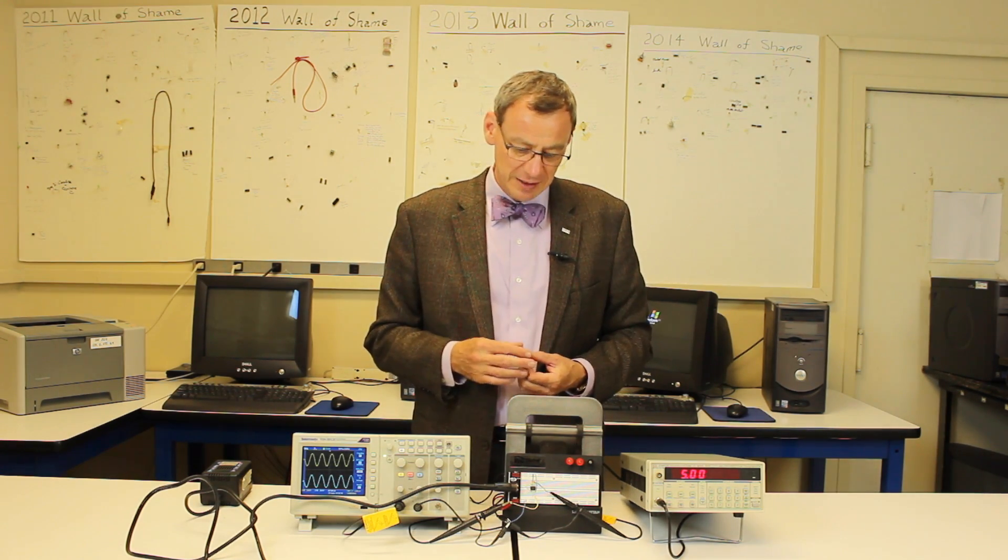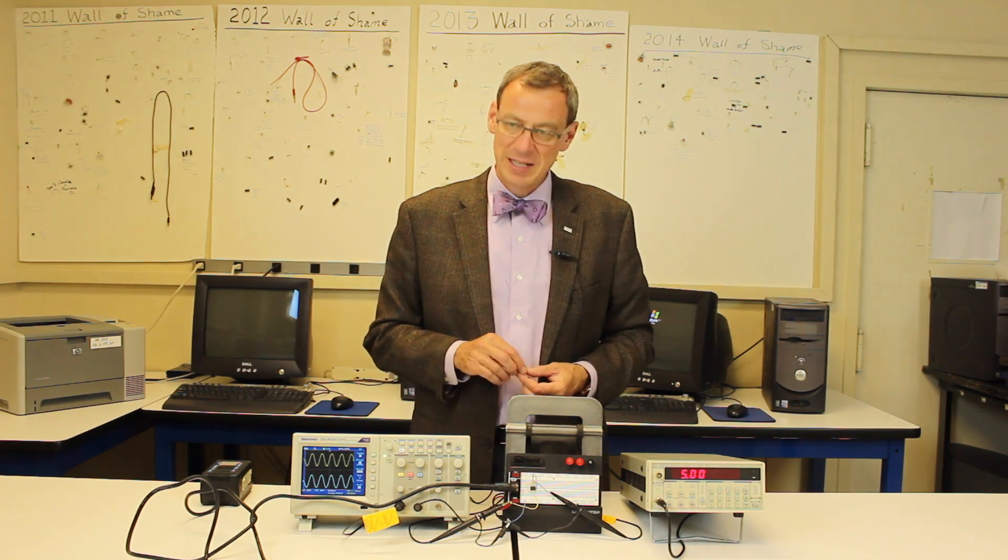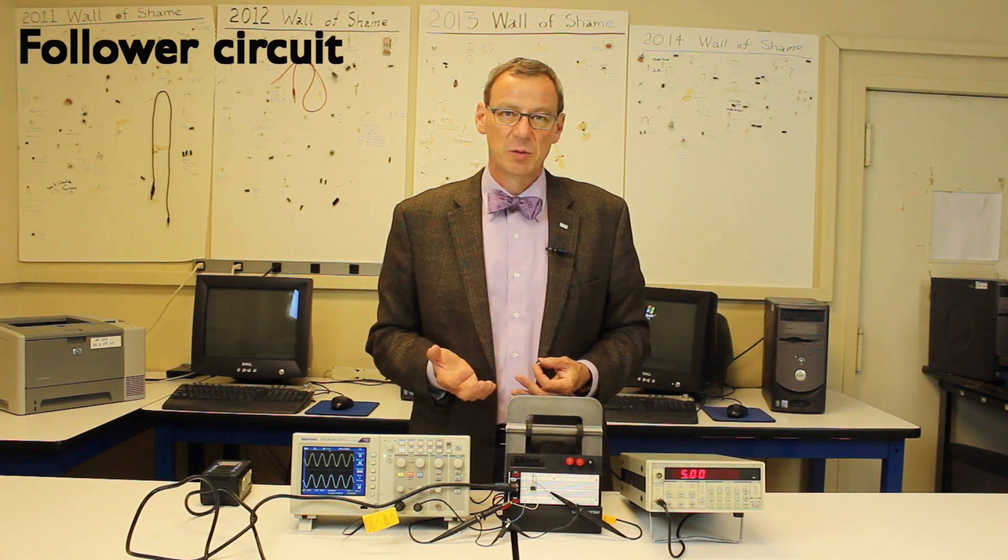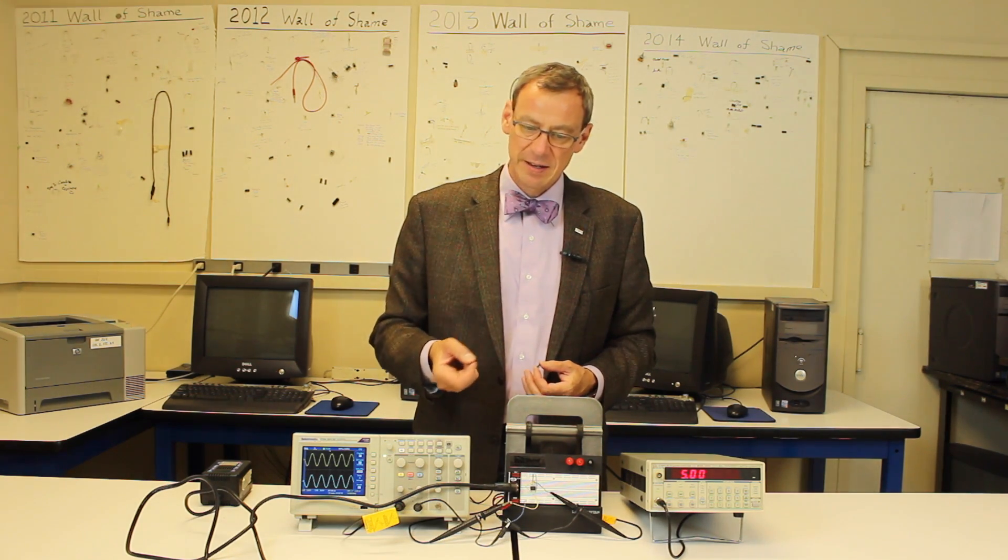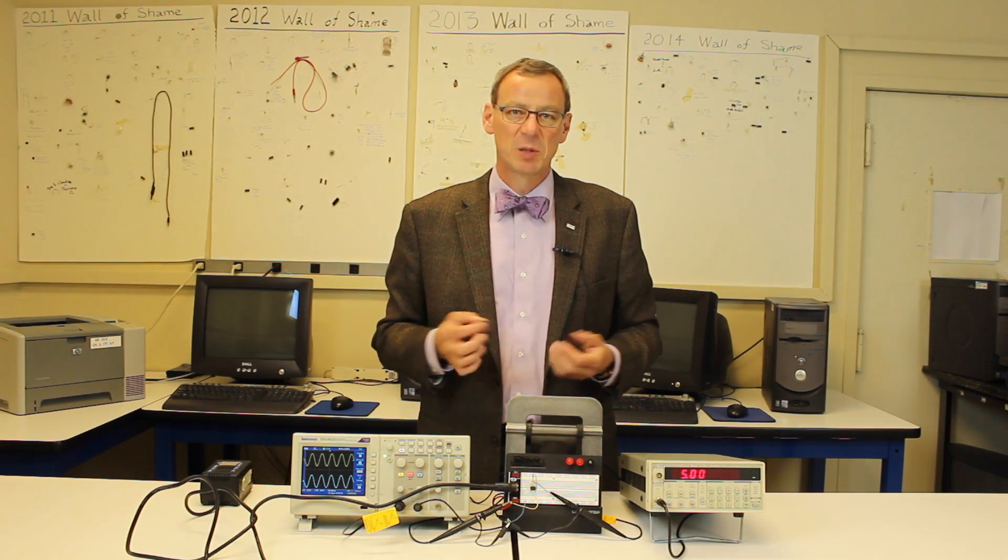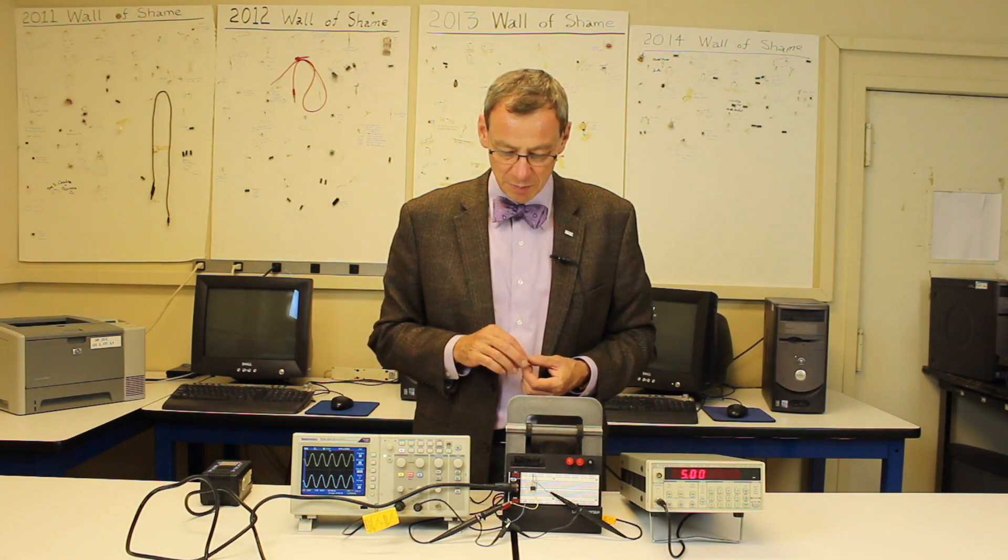In Lab 9, we've set the op-amp up to be a follower circuit. The circuit here we'll zoom in in a second. The output is fed into the inverting input, so we have negative feedback, and we look at the output.